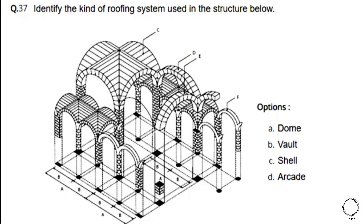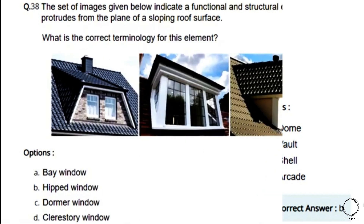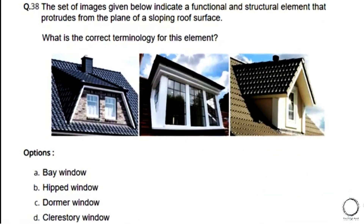Another architectural vocabulary question: Identify the kind of roofing system used in the structure shown. Options: a) dome, b) vault, c) shell, d) arcade. The right answer is option B — vault. These are vaults and not domes.